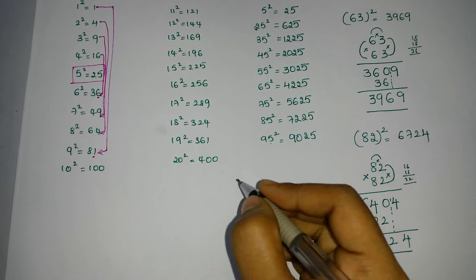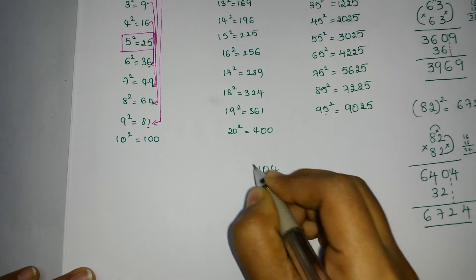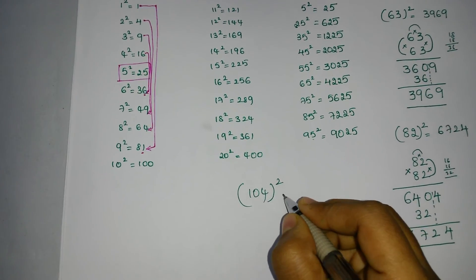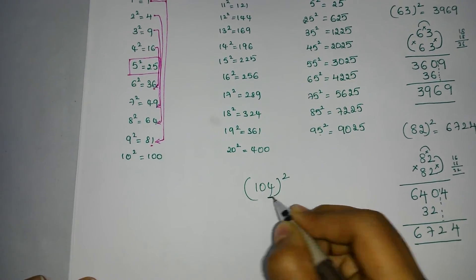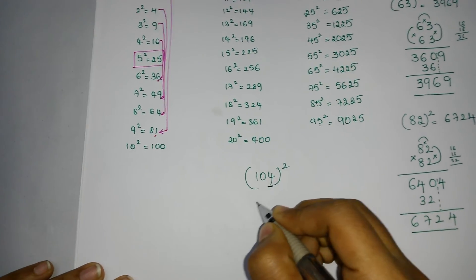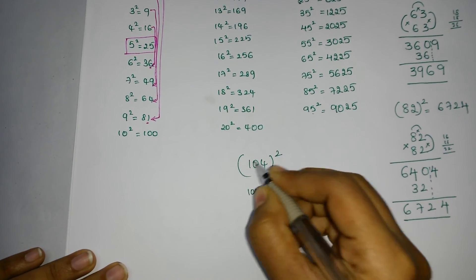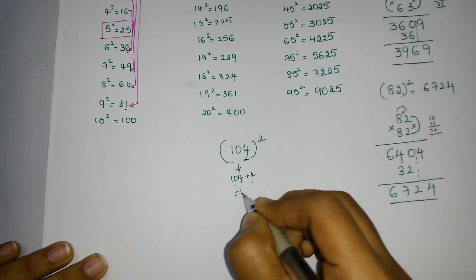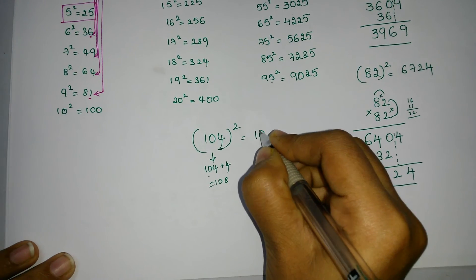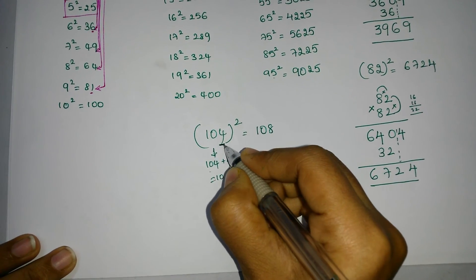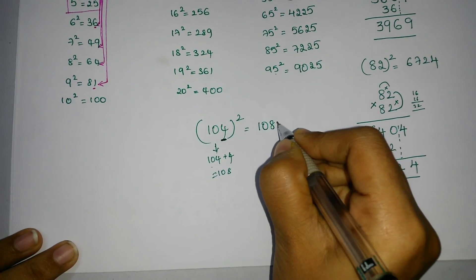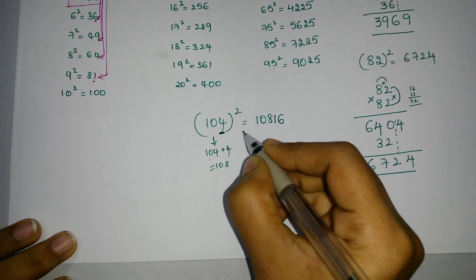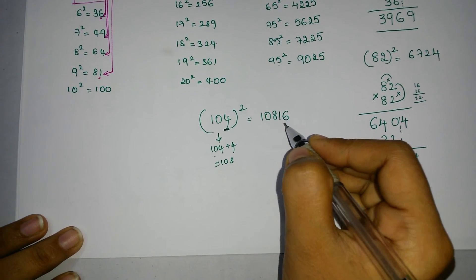Now another example: 104 square. How to find the square of 104? See here, in the one's place we have 4. So add 4 to the complete number. That means 104 plus 4 is 108. Just write 108 here and the square of 4 is 16. So the answer is 10816.